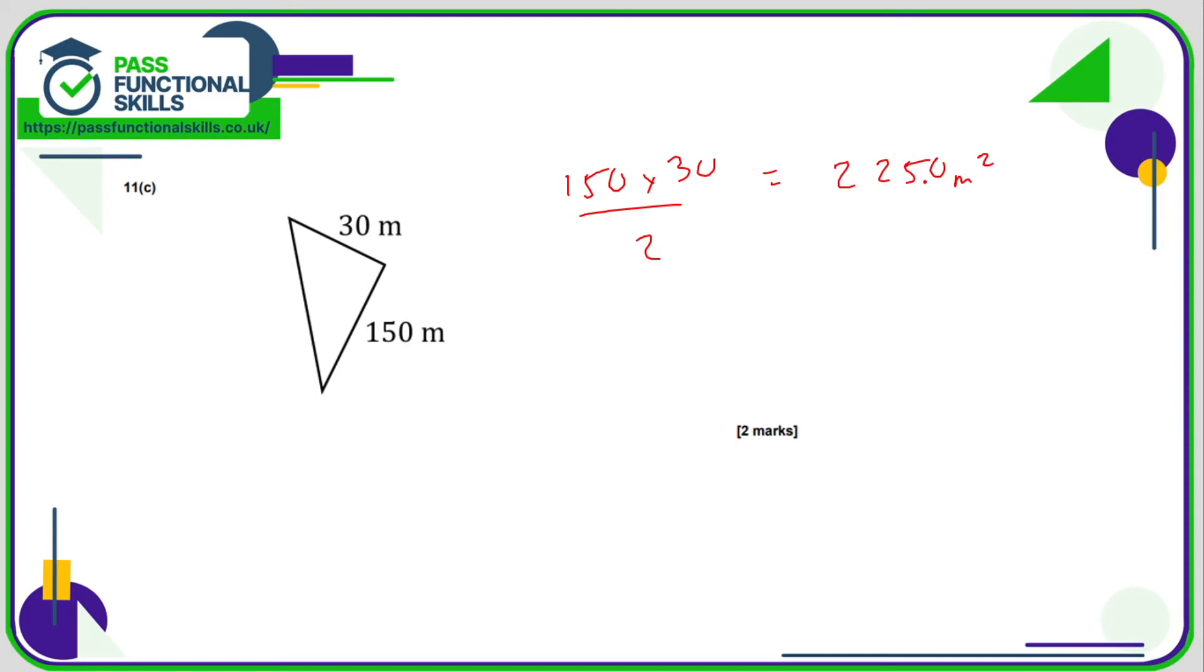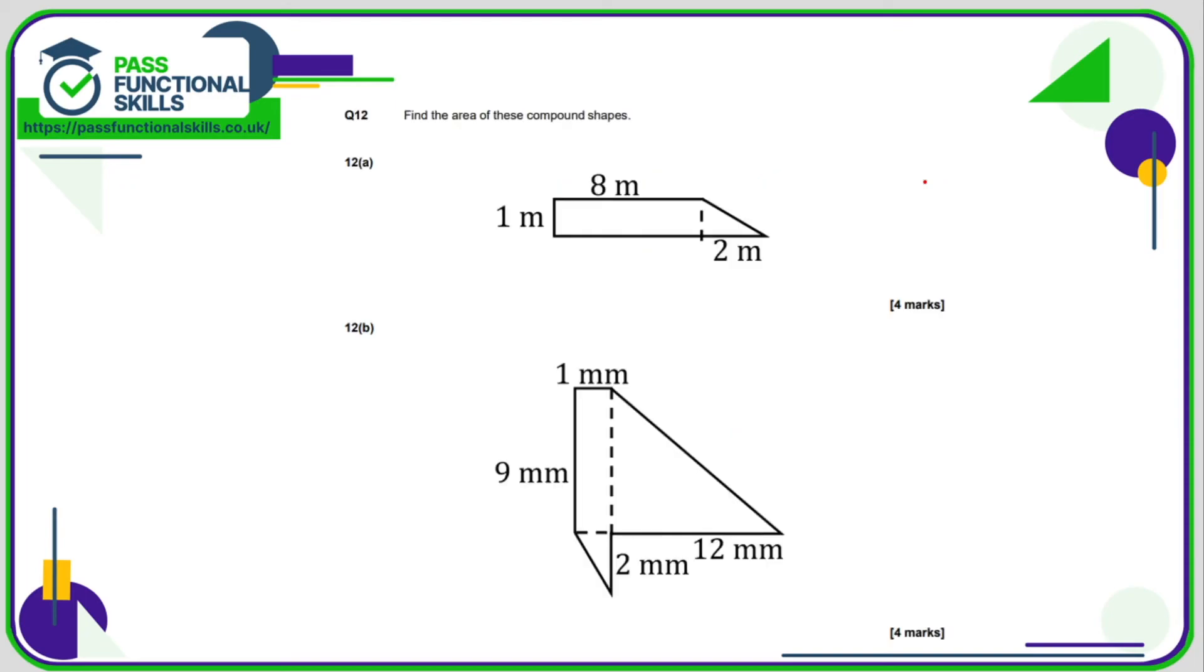And there is actually, sorry, there was one remaining question, question 12, and I believe this is a non-calculator question. So we want the area of the compound shape. So here we've got a rectangle and a triangle. So 8 times 1 is 8 meters squared. And here we've got a triangle, which is 2 times 1. So 2 times by 1 divided by 2. Well, 1 times 2 is 2. 2 divided by 2 is 1. So 8 meters squared plus 1 meter squared is 9 meters squared.